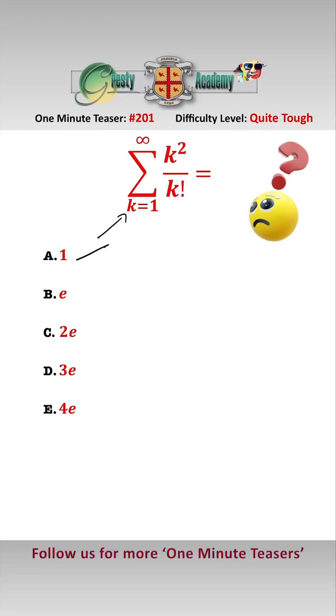As k is never zero in this summation, we can divide top and bottom by k to give ourselves the sum between k equals 1 and infinity of k over k minus 1 factorial. Letting m equal k minus 1,